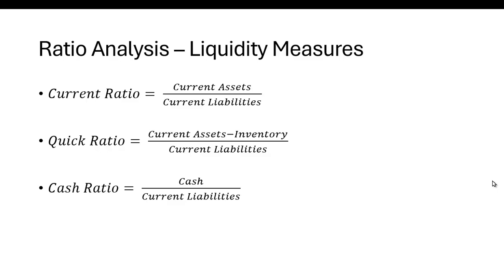I want to discuss ratio analysis, and specifically liquidity measures. Liquidity measures measure a firm's ability to meet short-term financial obligations. You can be exceptionally profitable, but if you can't pay your bills on time, you're likely going to get into some sort of financial trouble. So it's important that you have enough cash on hand or enough assets to pay for things.